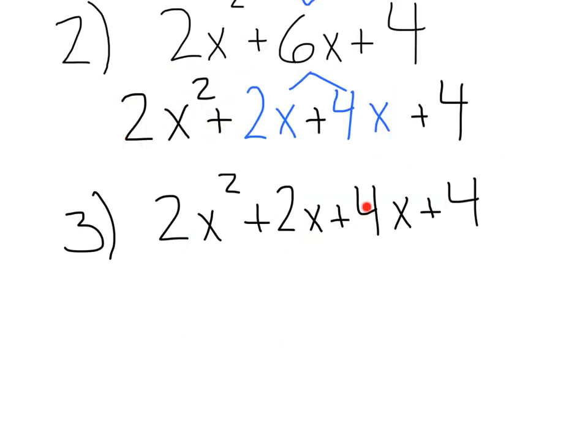Lastly, we want to take what we've rewritten here with 4 terms, 1, 2, 3, 4, and factor by grouping. If you remember to factor by grouping, we split these up into two groups.